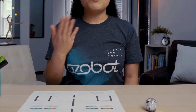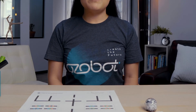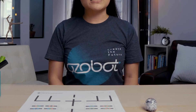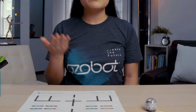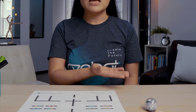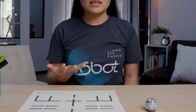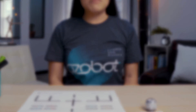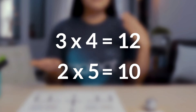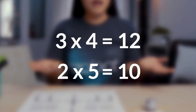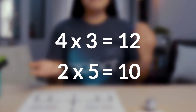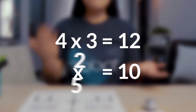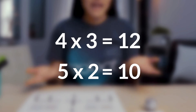As you master your multiplication facts, the commutative property is a helpful rule in math that tells you the order in which you multiply numbers doesn't change the product. Thinking back to our examples: 3 times 4 is 12, and 4 times 3 is 12. Similarly, 2 times 5 is 10, and 5 times 2 is also 10.